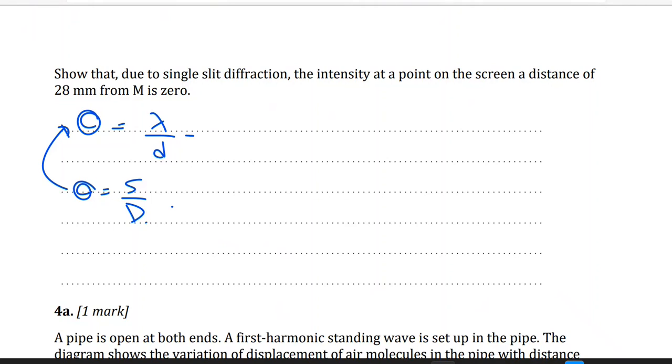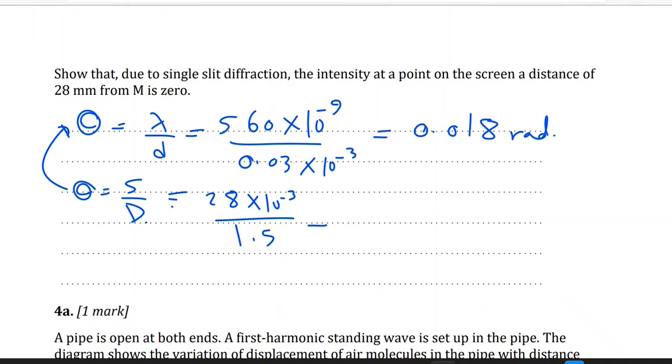So let's calculate this one. Lambda is 560 times 10 to the power negative 9 nanometer, divided by distance d, 0.03 times 10 to the power negative 3. And here we will have 0.018 radian. And here, s, the distance between two fringes, is 28 millimeter times 10 to the power negative 3, divided by capital D, distance from the two slits to the screen, is 1.5. So 0.018 radian.